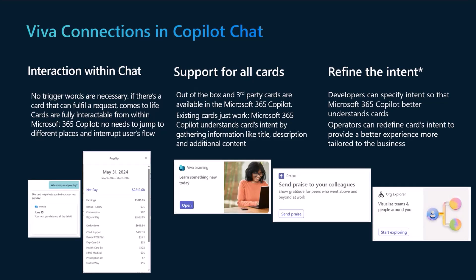This basically works for every kind of card — it doesn't matter if it's a first-party card, a third-party card, or what technology was used to create it. All cards are available, and Copilot has knowledge and awareness of those cards being available in the organization. Most importantly, Copilot has awareness of which cards are available to you specifically, because Viva Connections also supports audience targeting. This concept of audience card targeting is also respected as part of the Copilot integration.